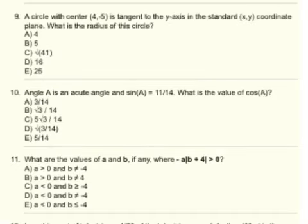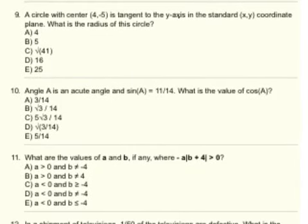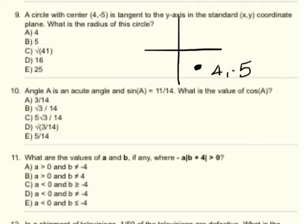On number nine, here's a coordinate plane, poorly drawn. And the point, that's the center of the circle, is over 4 and down 5, so we'll go right here. That's 4, negative 5. And there's a circle that is tangent to the y-axis. So if the circle is tangent to the y-axis and the center of the circle is 4, negative 5, that means you have to go 4 this way and then down to get to it, so the radius would have to be 4, which is A.